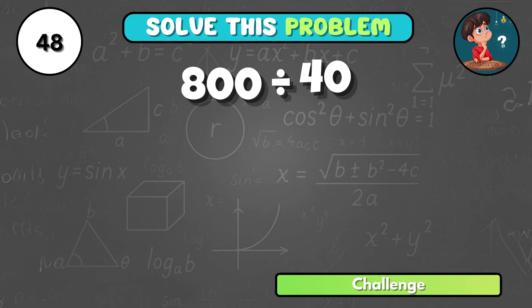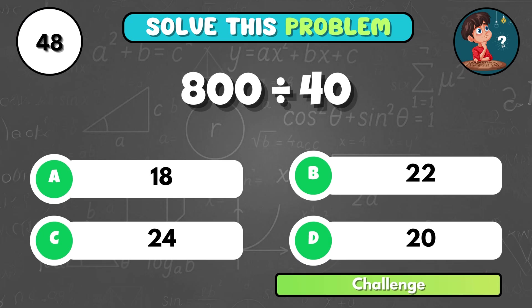If you divide 800 by 40, what's the answer? That's D, 20.